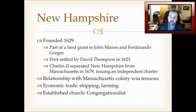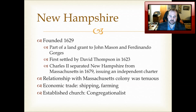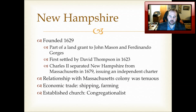Also in New England was New Hampshire, founded in 1629 as part of a land grant to John Mason and Ferdinando Gorges. It was first settled by David Thompson in 1623 and was established as an independent Puritan colony because settlers from New Hampshire had religious differences with the Massachusetts Bay Colony. Charles II, restored to the English throne in 1660, officially separated New Hampshire from Massachusetts by issuing it an independent charter, though it had been independently run prior to that. Relations with Massachusetts were often tenuous, with disputes over economics and land. Its economic trade was primarily shipping and farming, and its established church was Congregationalist.